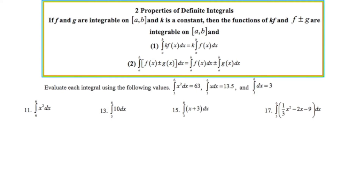On this slide we're going to be talking about two properties of definite integrals. The first property states that if you're taking the definite integral of a function that has a constant in front, as indicated by this k, you're allowed to move the constant out in front of the definite integral. The second property states that if you're taking the definite integral of a multi-term function, you can break that up into the definite integral of each term.